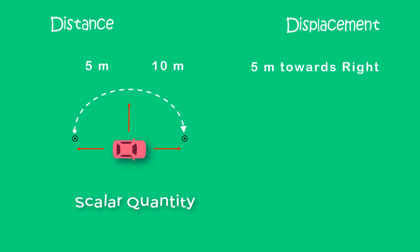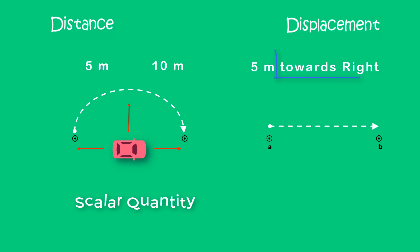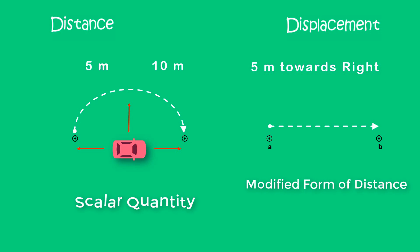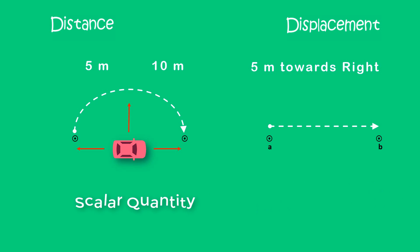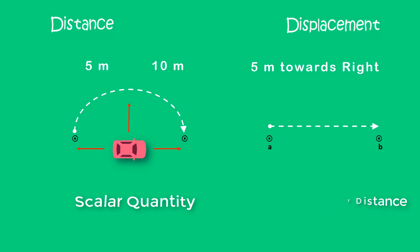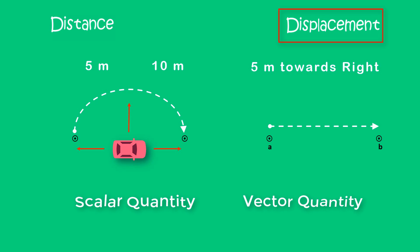But if I say a body moves 5 meters towards the right from point A to point B, now we exactly know that 5 meters is a distance and the direction is towards north. Can I say that this is the modified form of distance, or that this is distance in a specific direction? The answer to both questions is yes. In physics, distance in a specific direction is known as displacement. Therefore displacement is a vector quantity.